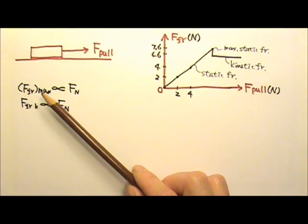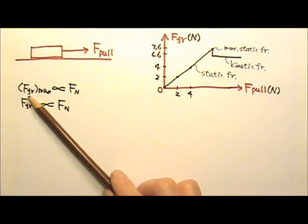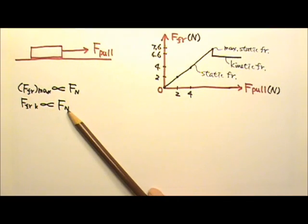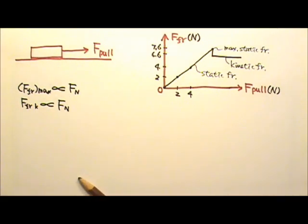Experiments show that this maximum possible static friction and the kinetic friction are proportional to the normal force between the two contact surfaces. It makes sense that the harder the two surfaces are pressed against each other, the stronger these friction forces.